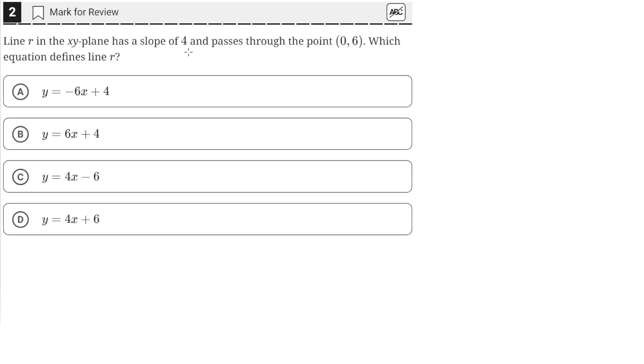Line R in the xy-plane has a slope of 4 and passes through the point (0,6). Which equation defines line R?